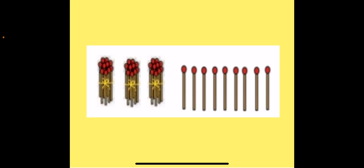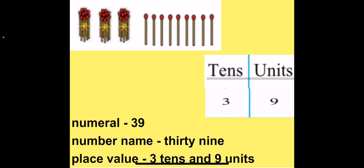Now when we add 1 more unit to 38 we get 3 tenths and 9 units. So 3 tenths and 9 units will give our next number 39, where 3 is in tenths place and 9 is in units place. The number name for 39 is THIRTY-NINE. The place value for 39 is 3 tenths and 9 units.